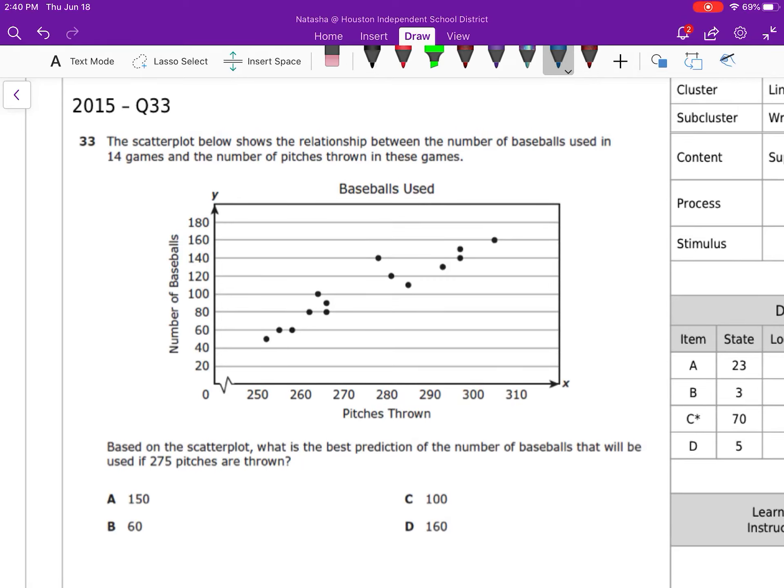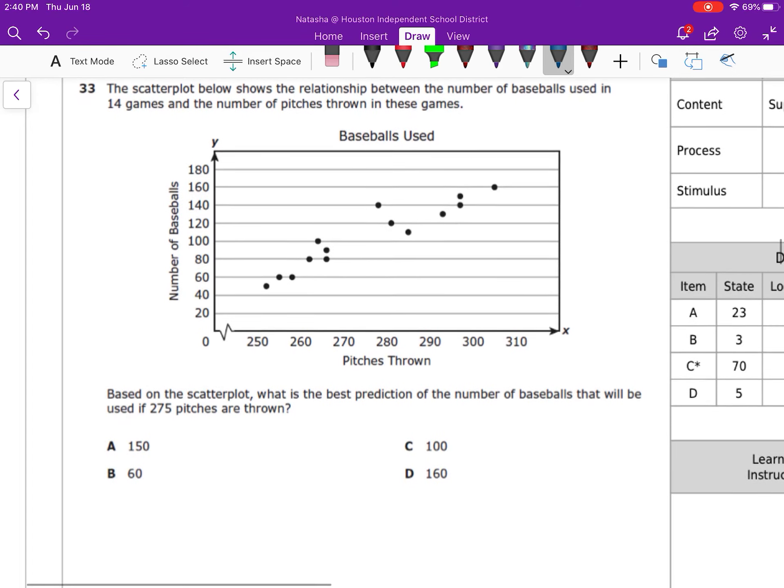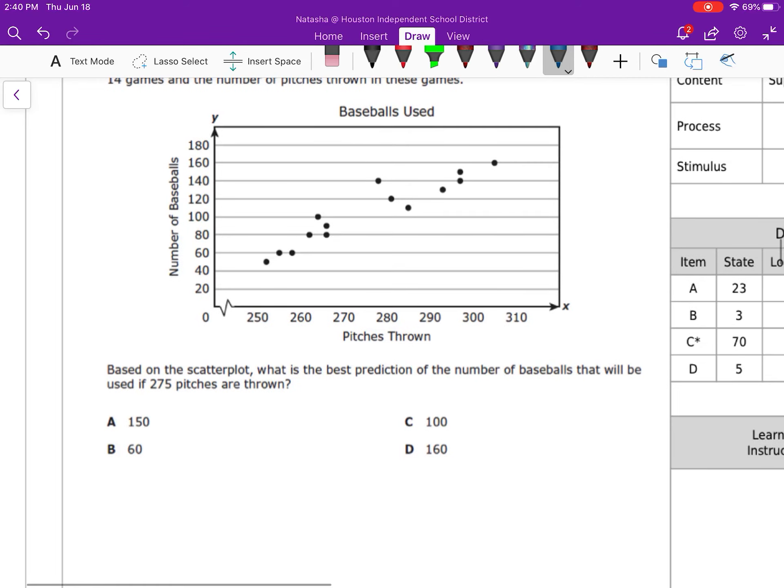All right, so on this question we have another scatterplot, and the scatterplot below shows the relationship between the number of baseballs used in 14 games and the number of pitches thrown in these games.